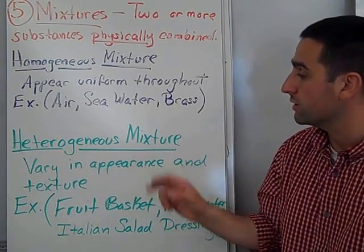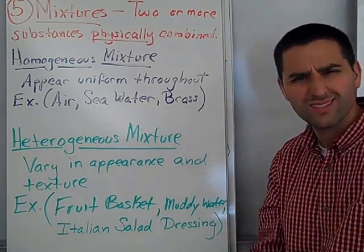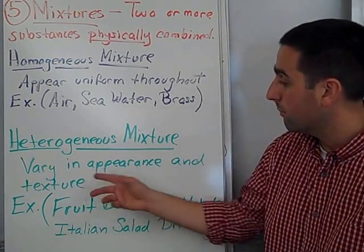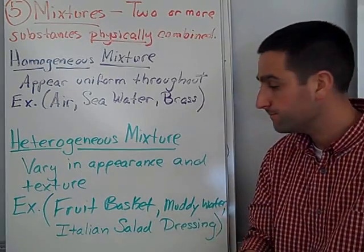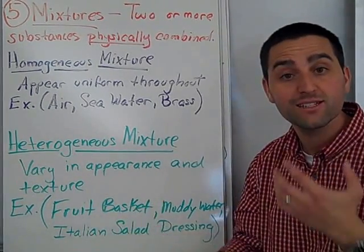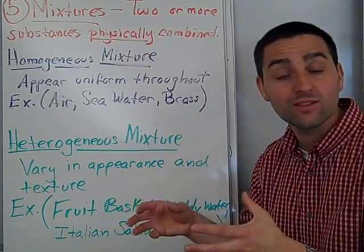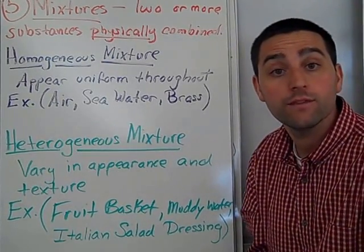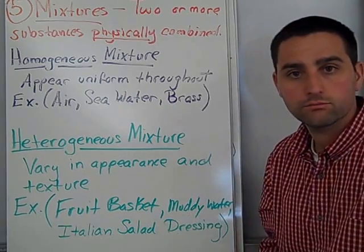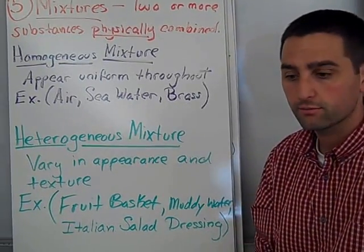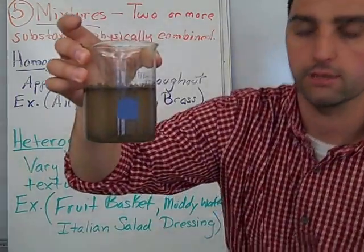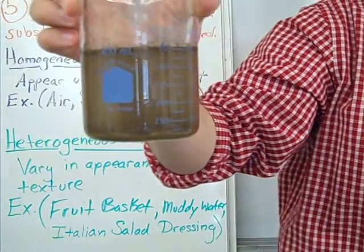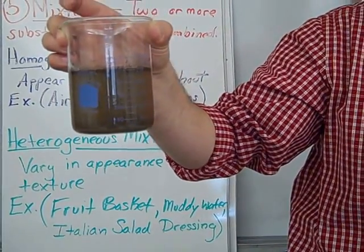And then we get into some heterogeneous mixtures. Hetero meaning different. They don't look the same. You can see the individual pieces of the mixture. So they vary in their appearance and their texture. Some examples would be fruit salad or a fruit basket. You can see the watermelon slices and the cantaloupe and the apples from the bananas and so on. You can tell that there's different parts in that mixture. And also muddy water. Italian dressing. Here's an example of muddy water. And I can see that there's different parts in that mixture. I can observe that.